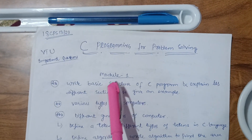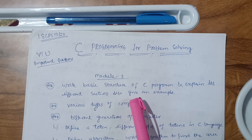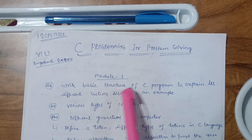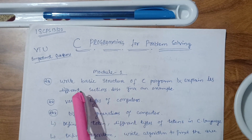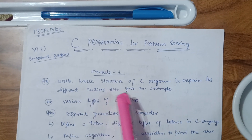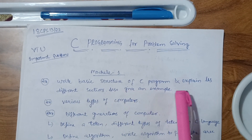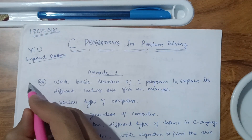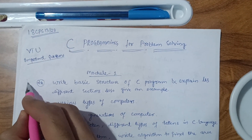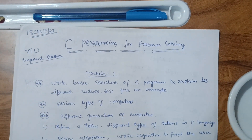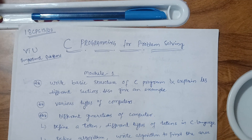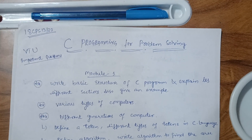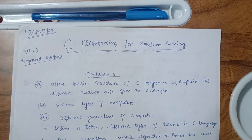In Module 1, just focus on this part: write the basic structure of a C program and explain its different sections with an example. This is one of the most important questions in Module 1. You have to focus on this part, because otherwise most of the programs are there that you need to be aware of.